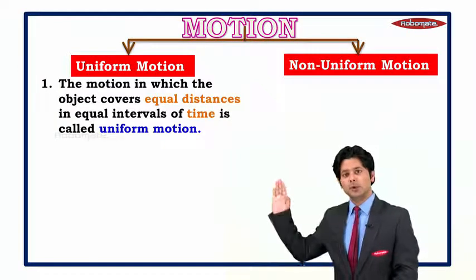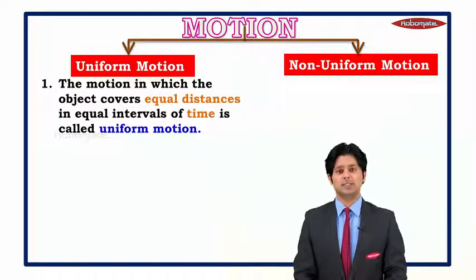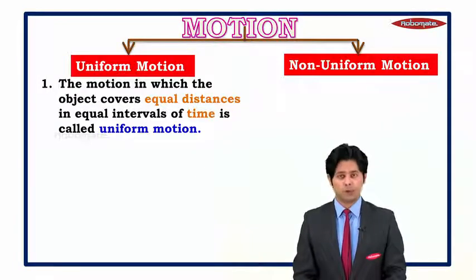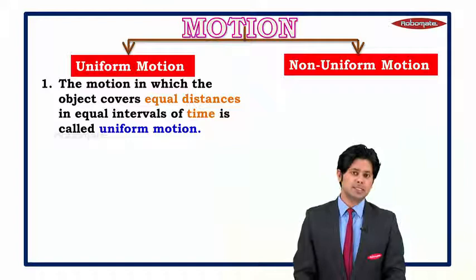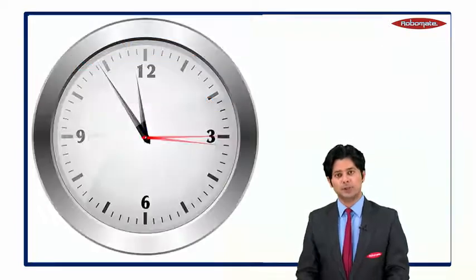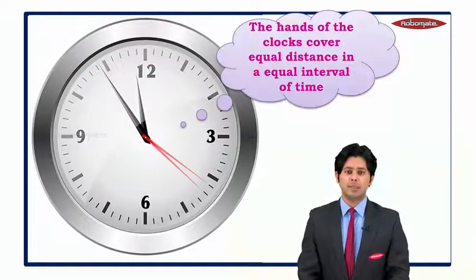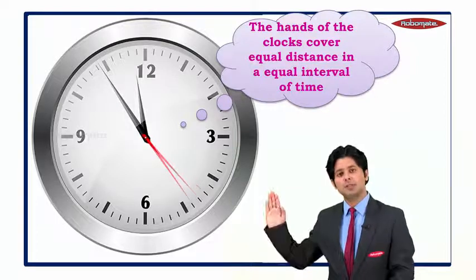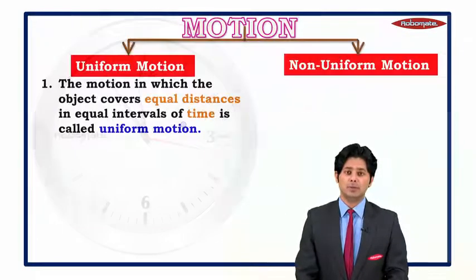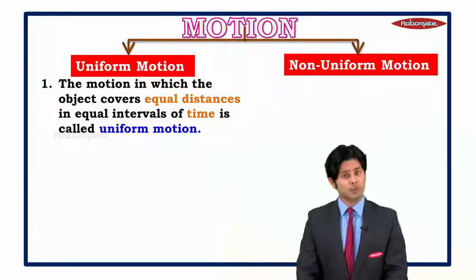The first type is uniform motion: the motion in which the object covers equal distance in equal interval of time is called uniform motion. For example, the hands of a clock cover equal distance in equal interval of time, so they are said to be in uniform motion.